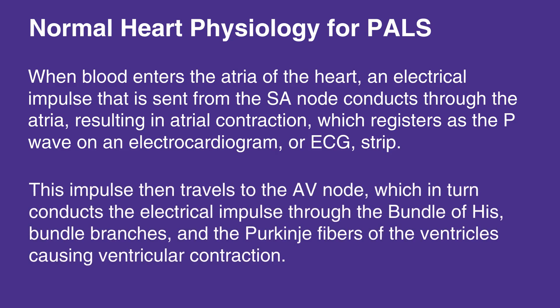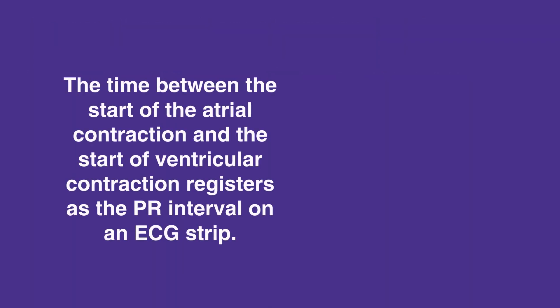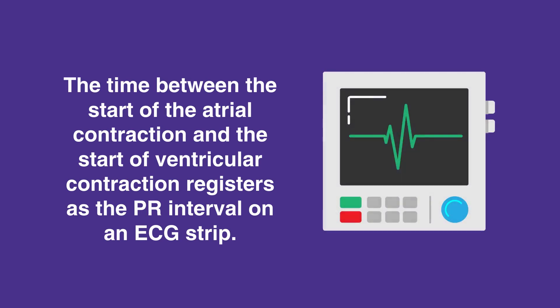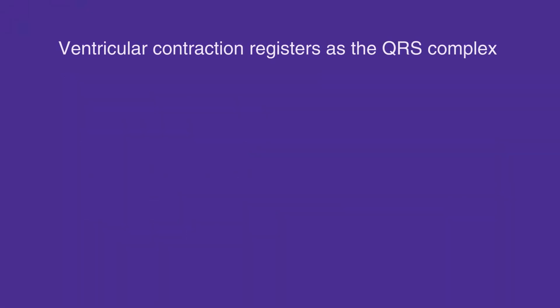This impulse then travels to the AV node, which in turn conducts the electrical impulse through the bundle of HIS, bundle branches, and the Purkinje fibers of the ventricles, causing ventricular contraction. The time between the start of atrial contraction and the start of ventricular contraction registers as the PR interval on an ECG strip. The ventricular contraction registers as the QRS complex.